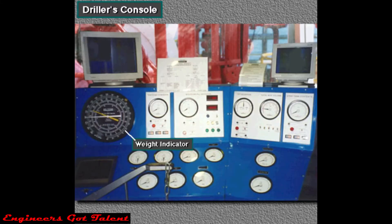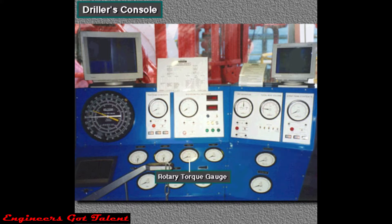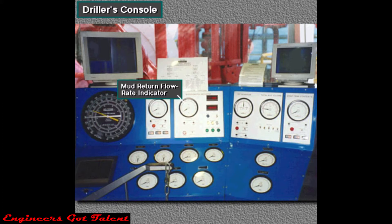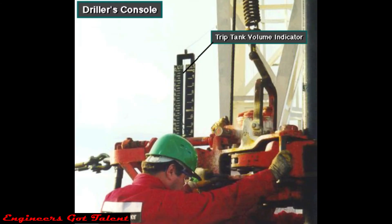Indicators and gauges on the driller's console include the weight indicator, the pump rate indicator, mud pump pressure gauge, rotary tachometer, rotary torque gauge, tong torque gauge, mud return flow rate indicator, mud tank level indicator, and trip tank volume indicator.